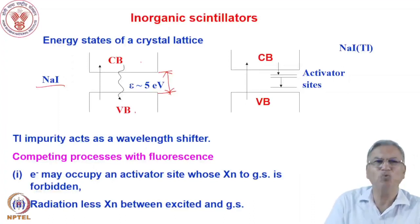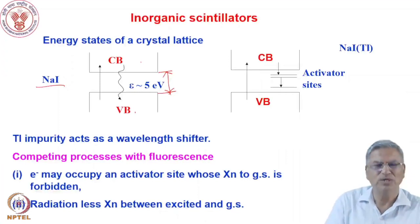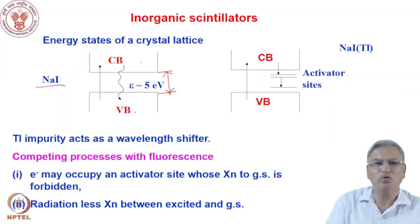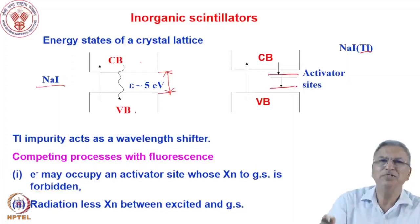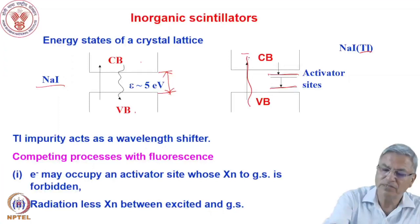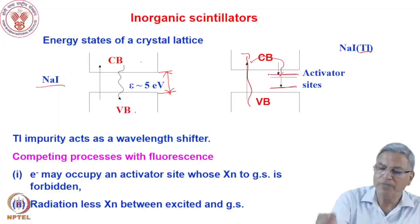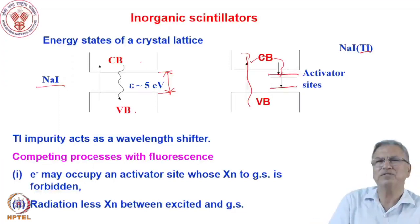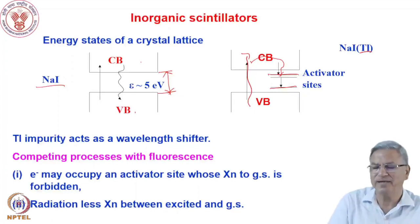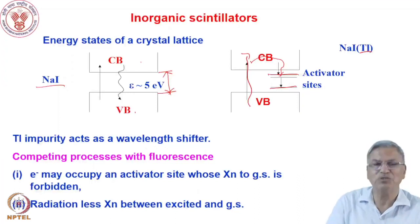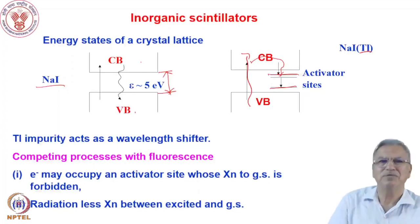Sodium iodide as such is a very poor scintillator — it does not emit fluorescence with high yield, and even if it does, the emission is in the ultraviolet region. Instead, if you dope sodium iodide with a small quantity — 0.1% — of thallium as an impurity, this thallium generates activator sites between the valence band and conduction band. When radiation excites valence band electrons to the conduction band, these electrons get trapped in the activator excited states, which then undergo fluorescence, emitting light compatible with photomultiplier tubes.